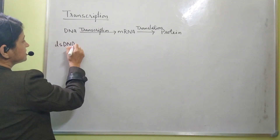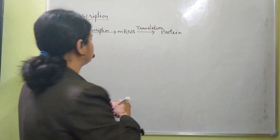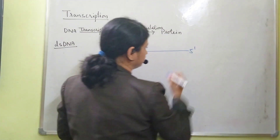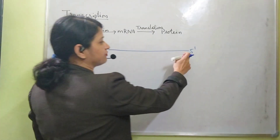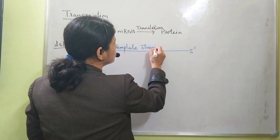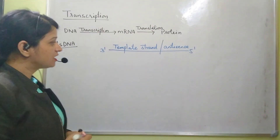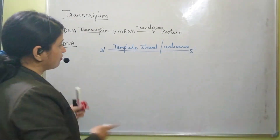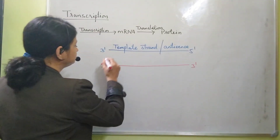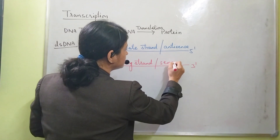In our double-stranded DNA, there are two strands. The strand which has polarity 3 prime to 5 prime will be called the template strand. The other strand which has polarity 5 prime to 3 prime is called the coding strand or sense strand.